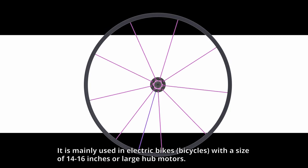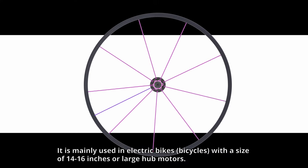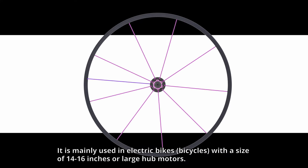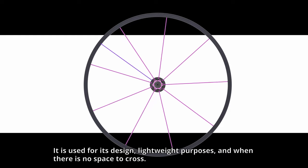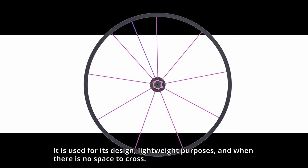It is mainly used in electric bikes, bicycles with a size of 14 to 16 inches, or large hub motors. It is used for its design, lightweight purposes, and when there is no space to cross.